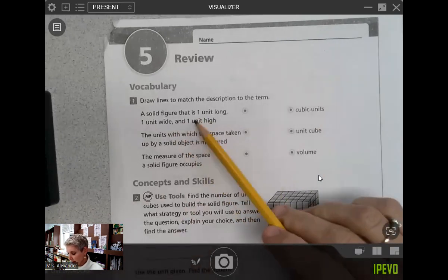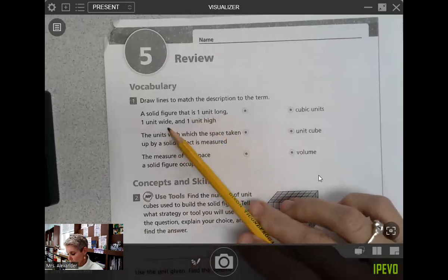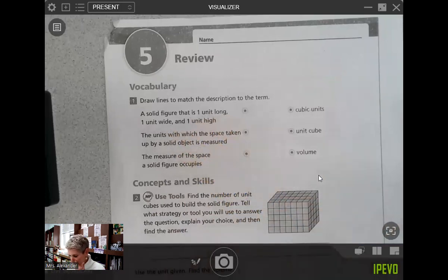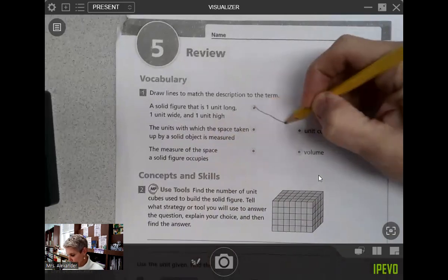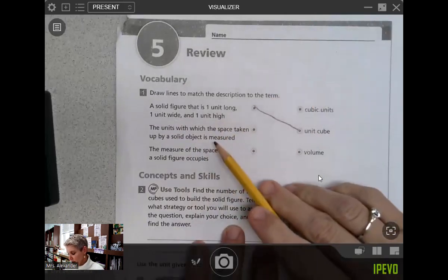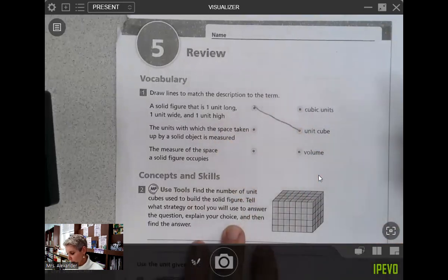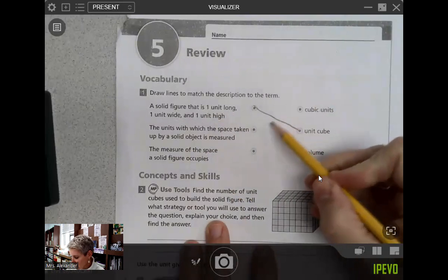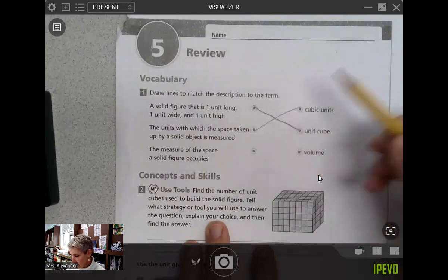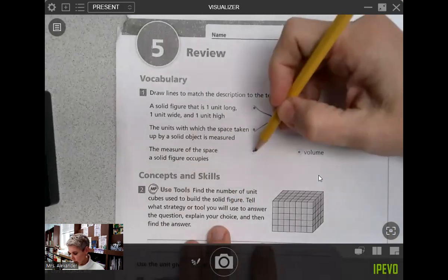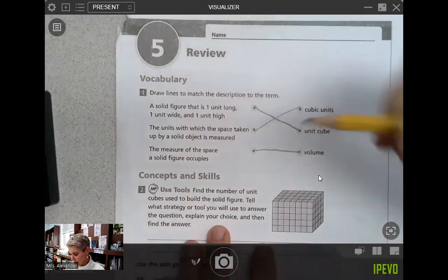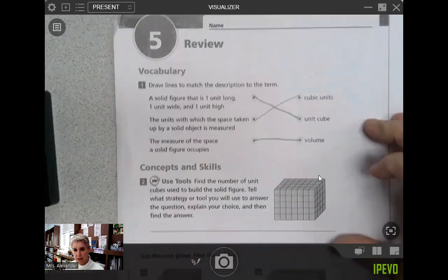A solid figure that is one unit long, one unit wide and one unit high, that is going to be a unit cube. The units with which the space taken up by a solid is measured, that's going to be cubic units. The measure of the space a solid figure occupies is going to be our volume. All right, so that's our vocabulary.